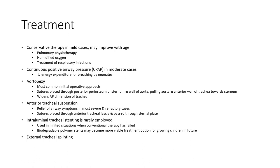Aortopexy is the most common initial surgical approach. Sutures are placed through the periosteum, sternum, and anterior wall of the aorta, pulling the aorta anteriorly and thus drawing the anterior wall of the trachea toward the sternum, thereby widening the anteroposterior diameter of the trachea — this is called anterior tracheal suspension.